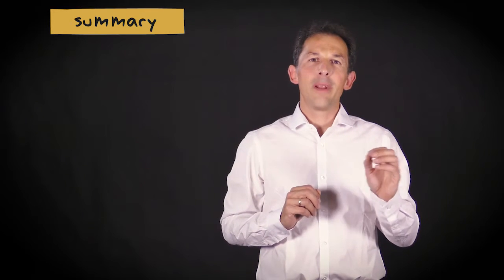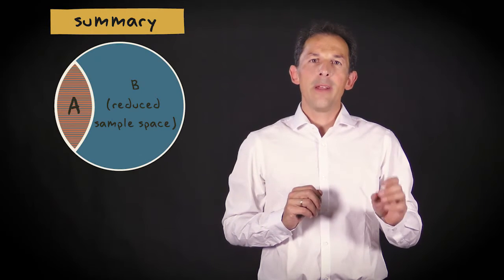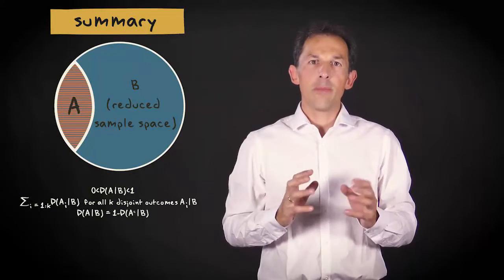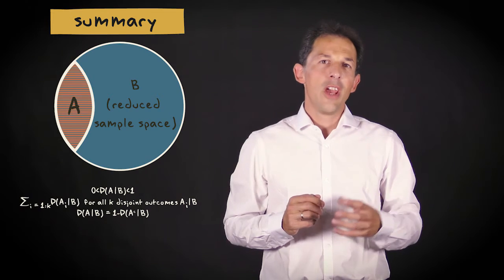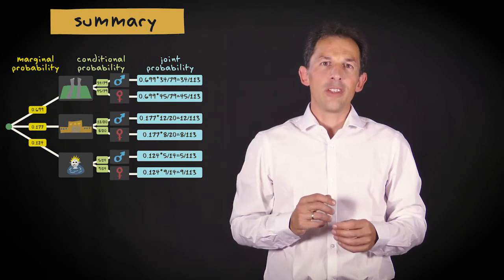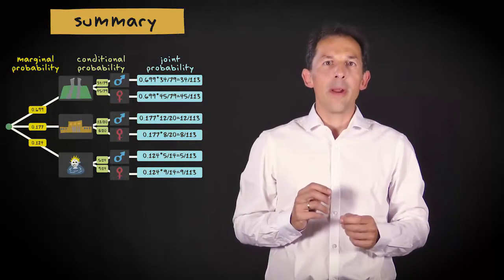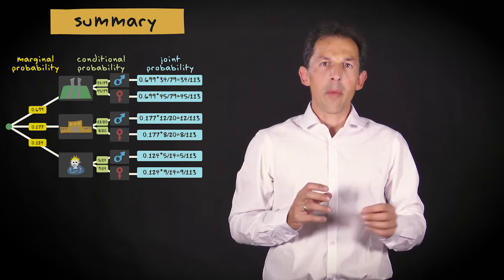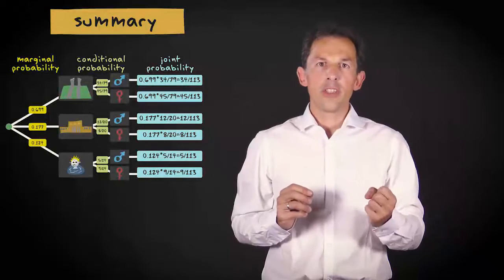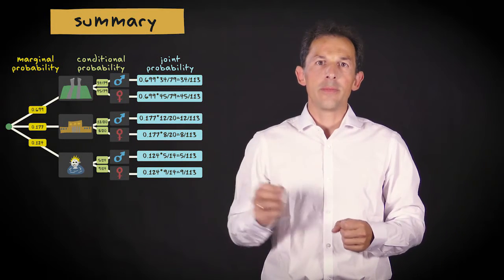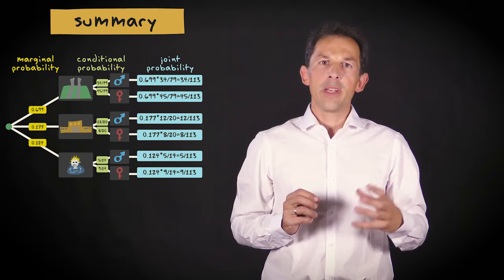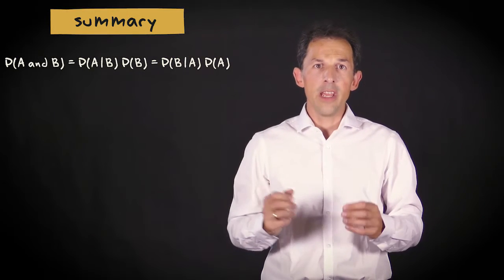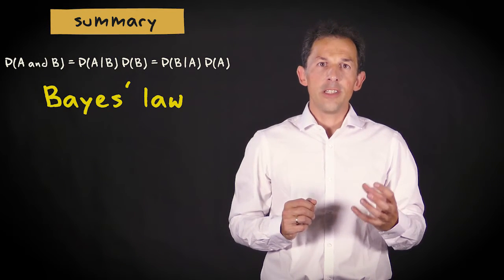Let me summarize what I have explained in this video. The probability of A conditional on B can be considered as the probability of A in the reduced sample space where B occurred. A tree diagram contains different probabilities: at the first node it has marginal probabilities, and for any node further on it has conditional probabilities. The joint probabilities at the end result from multiplying marginal and conditional probabilities along a branch. The fact that the joint probability can be calculated based on the conditional probability of A given B as well as B given A leads to Bayes' law, which relates these two conditional probabilities.